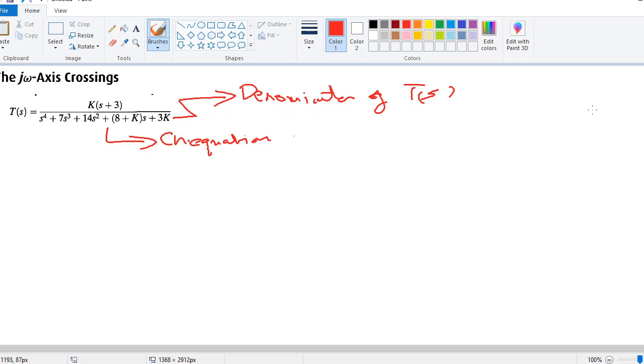In this case, it will be s raised to 4, s cubed, s squared, s raised to 1, and s raised to 0. And then, let's draw the lines.